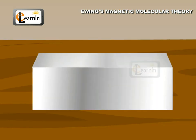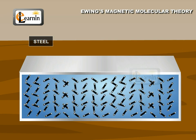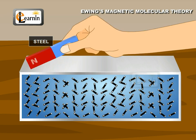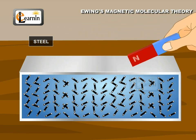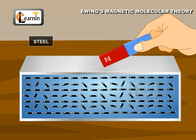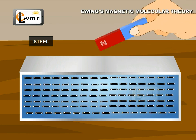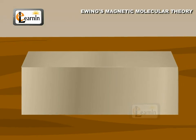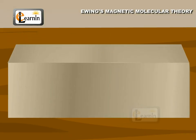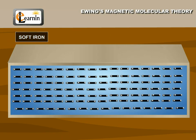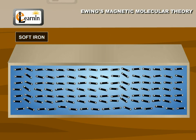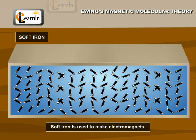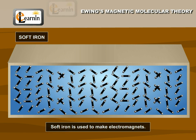In certain substances, like steel, the alignment of molecular magnets produced during magnetization remains permanent. Therefore, steel is used to make permanent magnets. But in some substances, like soft iron, the alignment is disturbed easily. Therefore, soft iron is used to make electromagnets.